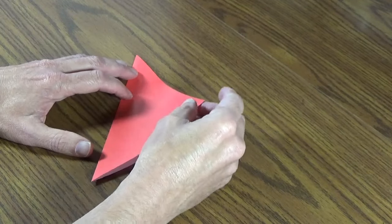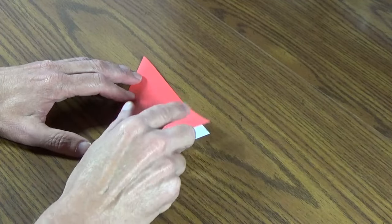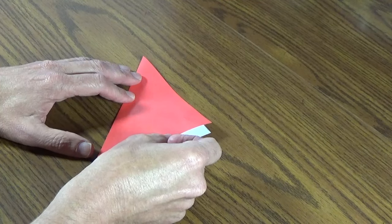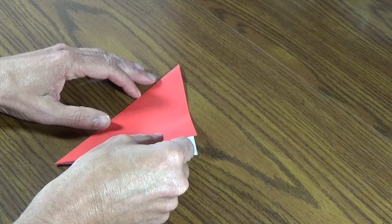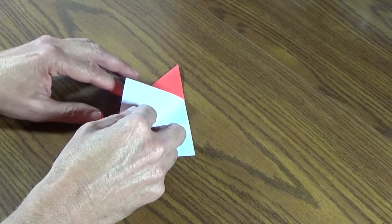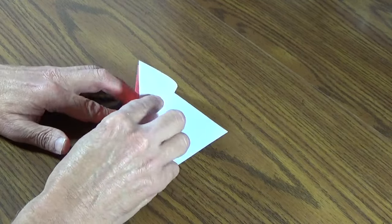Take this right hand corner sticking out here, the point of your triangle right there, and fold it back to this crease. Fold it back to the line.